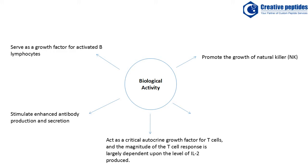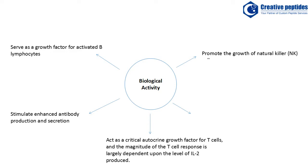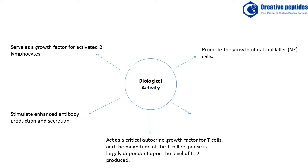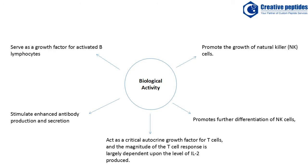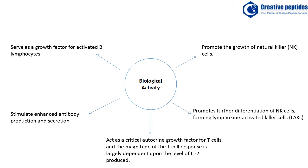A third biological activity of interleukin-2 pertinent to immunostimulation is its ability to promote the growth of natural killer cells. It also promotes further differentiation of NK cells, forming lymphocyte-activated killer cells, which exhibit an enhanced ability to directly kill tumor cells or virally infected cells.